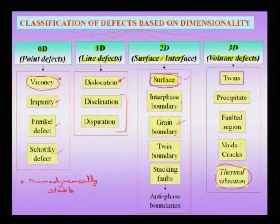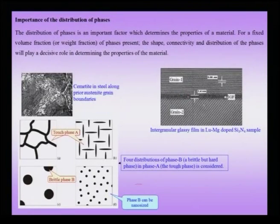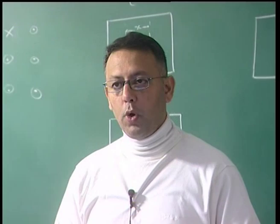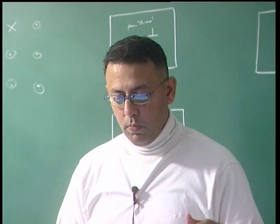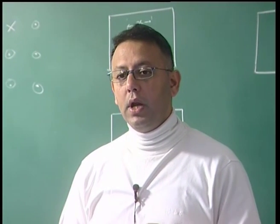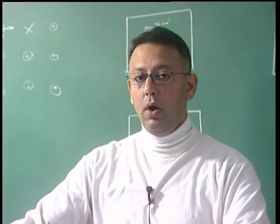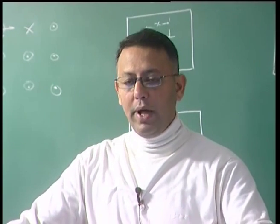An interface boundary is the boundary between two phases. As pointed out when discussing phase distributions, interface properties are very important for the material as a whole — interfacial debonding or nucleation of cracks at the interface can cause the material to perform poorly. The grain boundary is a third kind of two-dimensional defect that in practical or engineering terms is nearly unavoidable, unless extreme care is taken to produce a single crystal using techniques like the Bridgman or Czochralski methods.